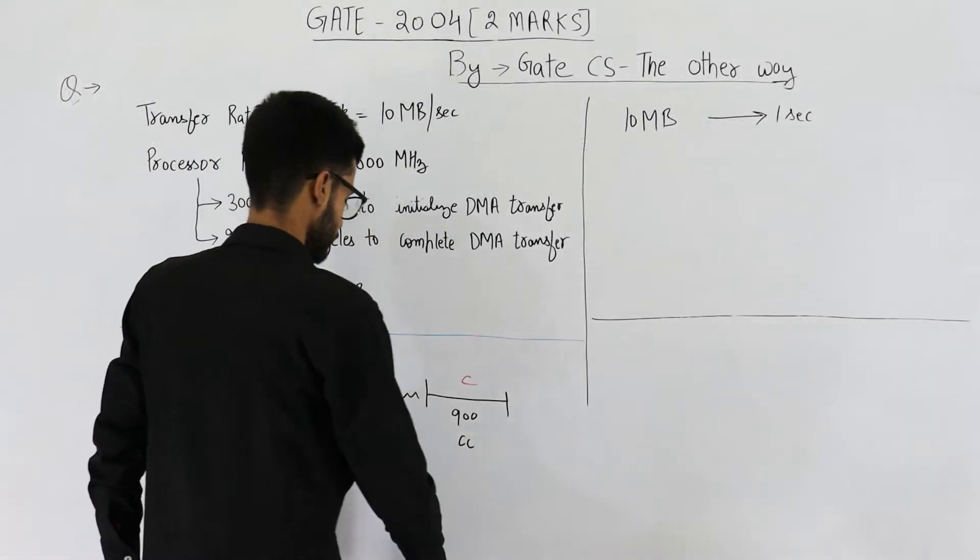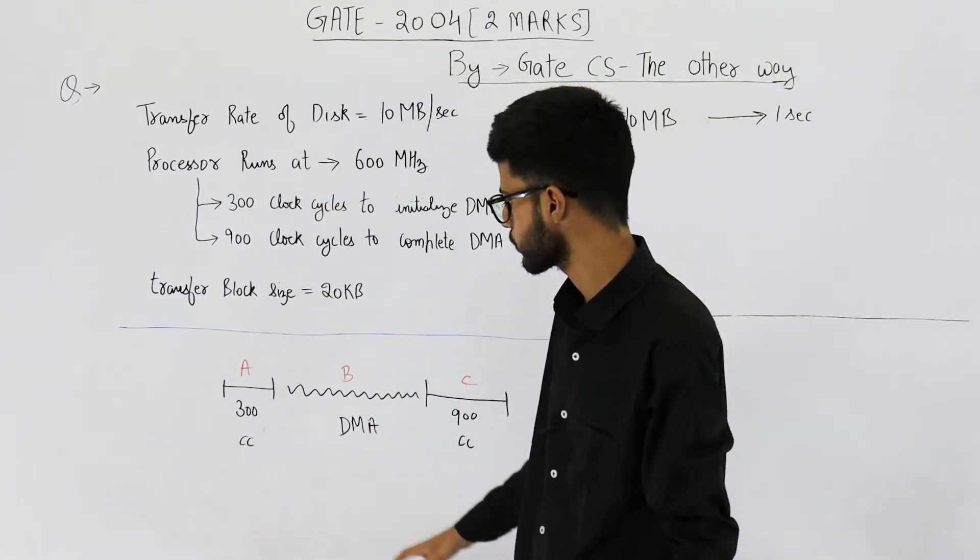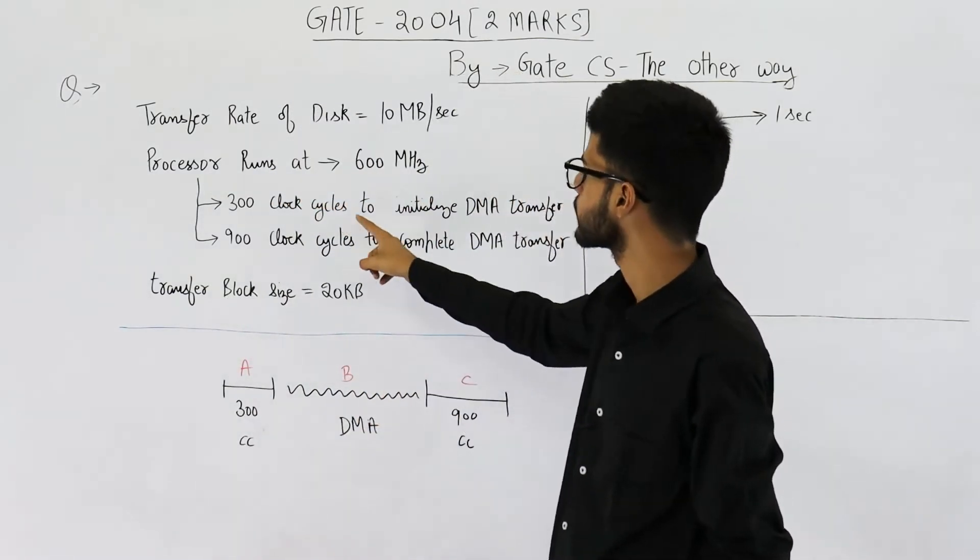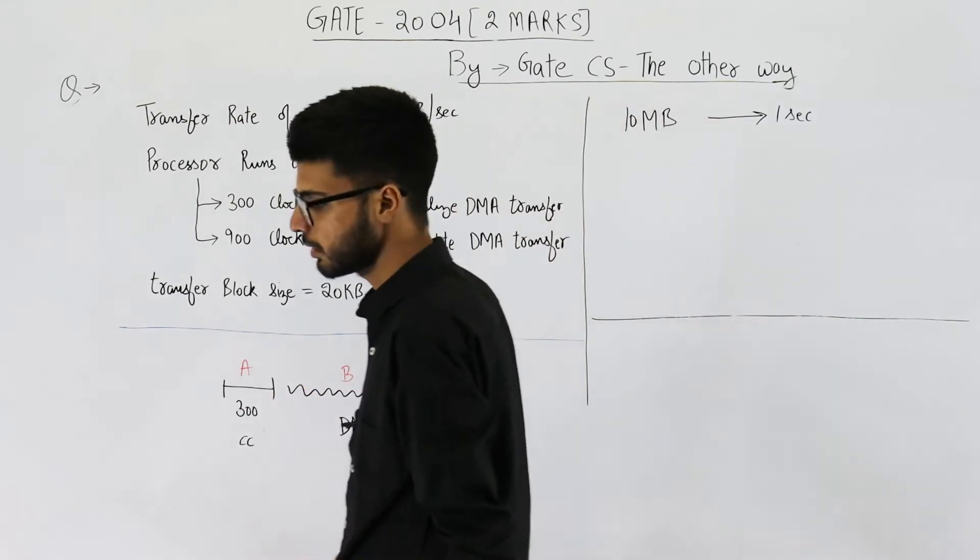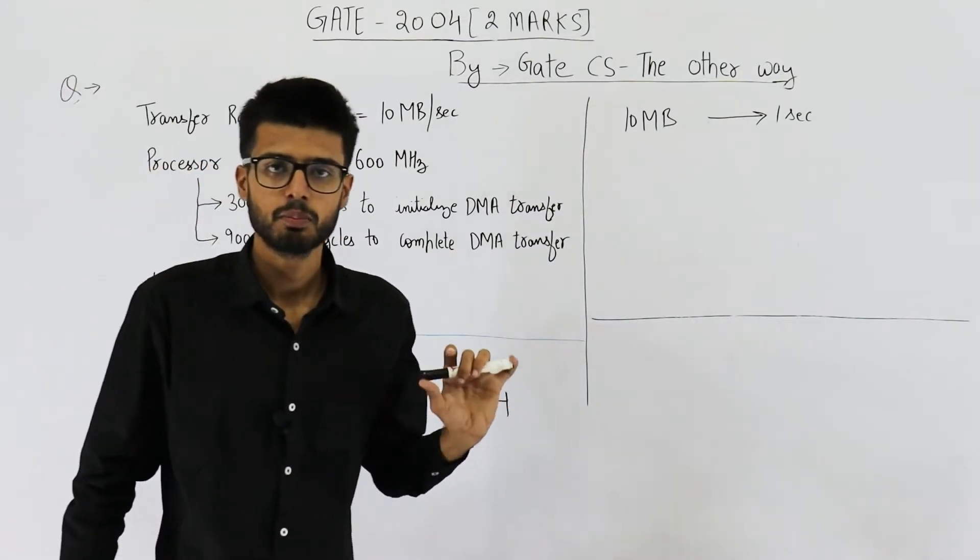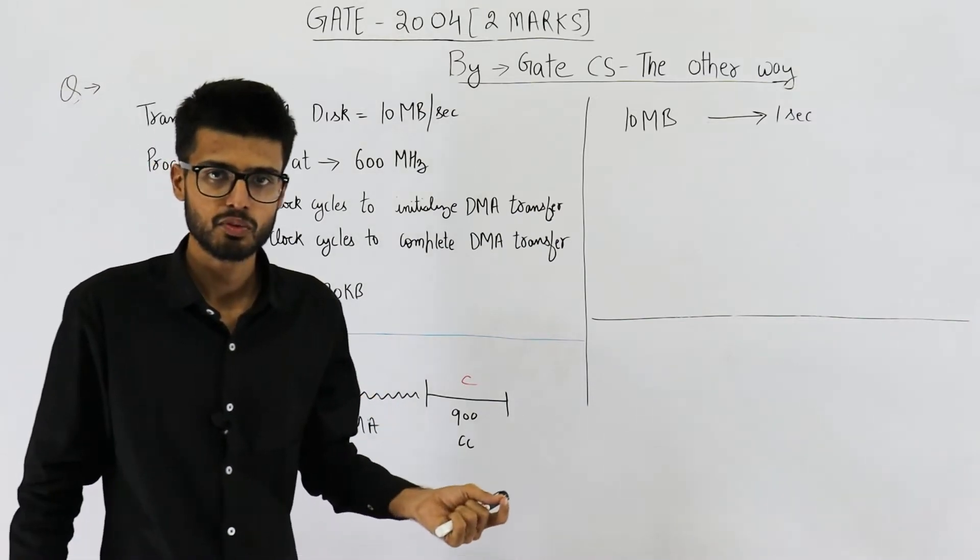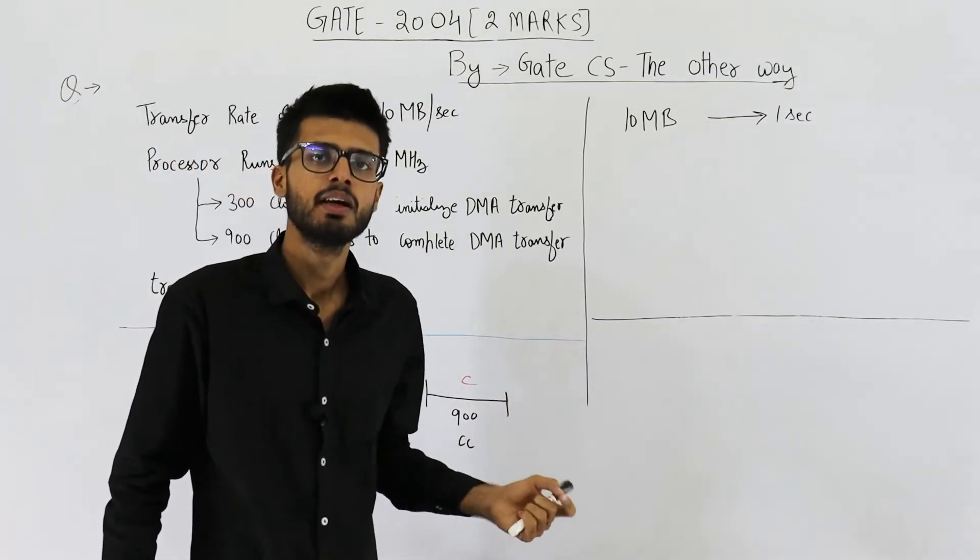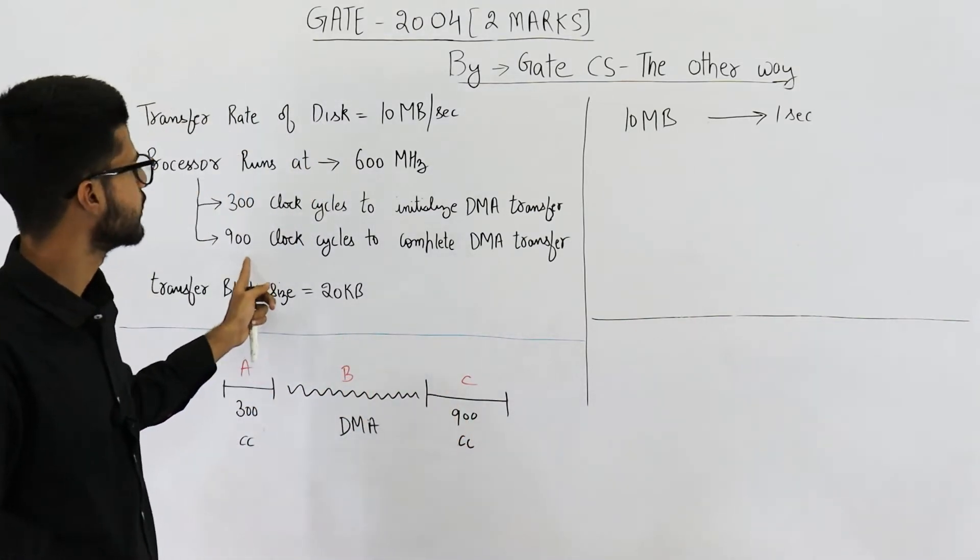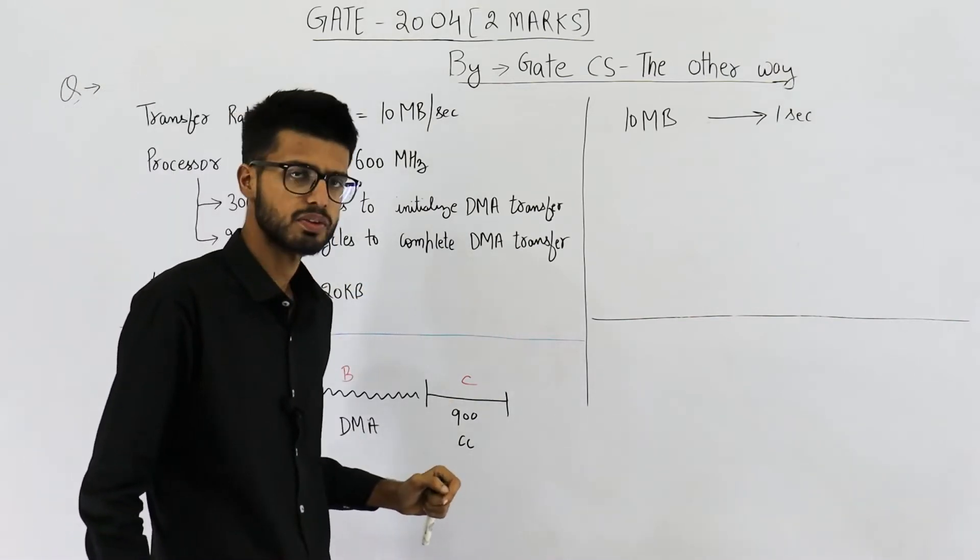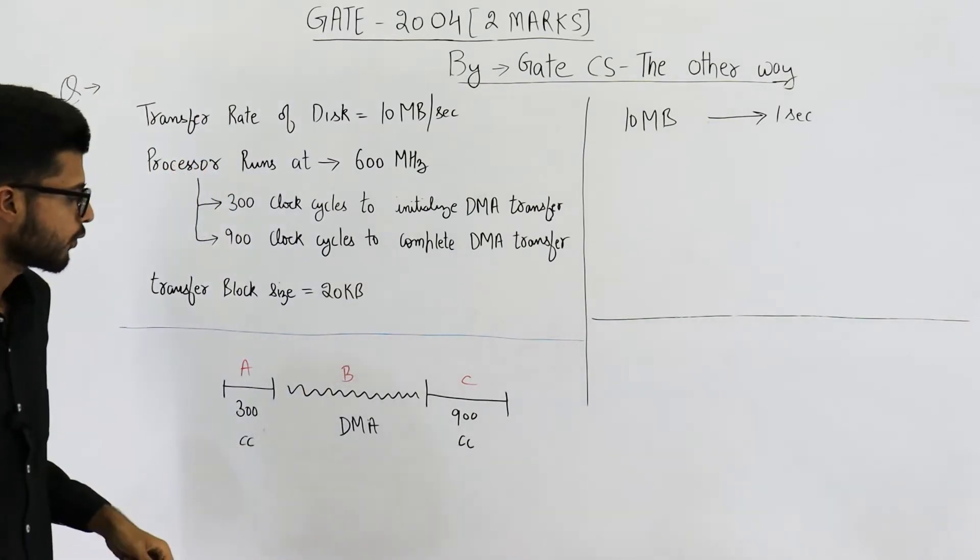So they're talking about a system in which the processor needs to spend 300 clock cycles to initialize a DMA transfer. These 300 clock cycles will be used for providing the necessary information to the DMACC chip, that is the base address from where the transfer needs to begin and how many bytes will be transferred and so on. Similarly, 900 more clock cycles are needed to complete a DMA transfer. One DMA transfer is of 20 KBs.